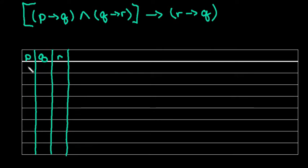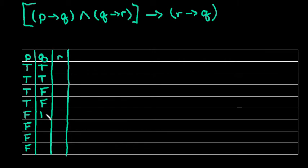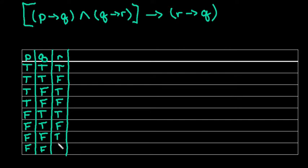We fill in the columns: P always starts with four trues followed by four falses. Q is always two trues, two falses, two trues, two falses. And R alternates true, false, true, false, true, false, true, false. When setting up for three statements, you will always start the same way.